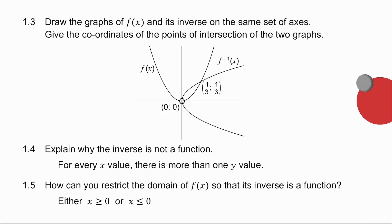1.4 says explain why the inverse is not a function. Well, if I have a look at it, if I draw a vertical line, for this particular x value, there are two different y values. So it's not a function because for every x value, there is more than one y value.